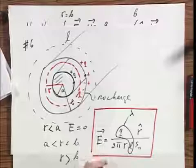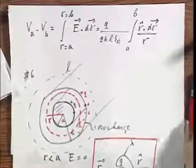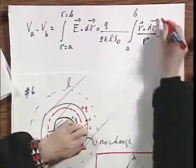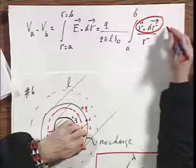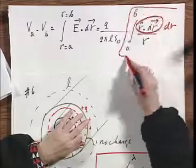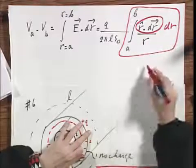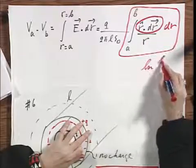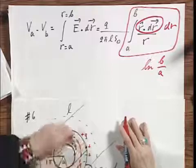That equals Q divided by 2 pi L epsilon zero times the integral in going from A to B. R roof dot dr divided by R. Remember, the field falls off as 1 over R because we're dealing with cylinders. This here, this dot product is a scalar, which is the same as dr.